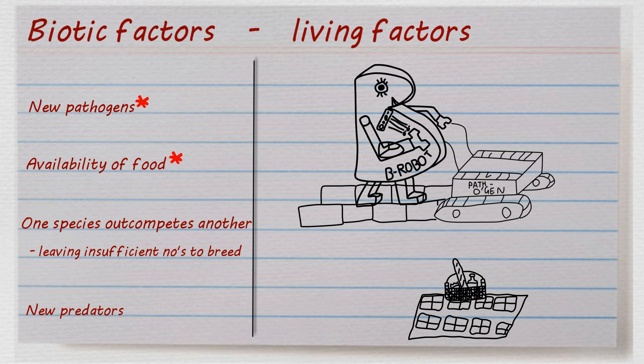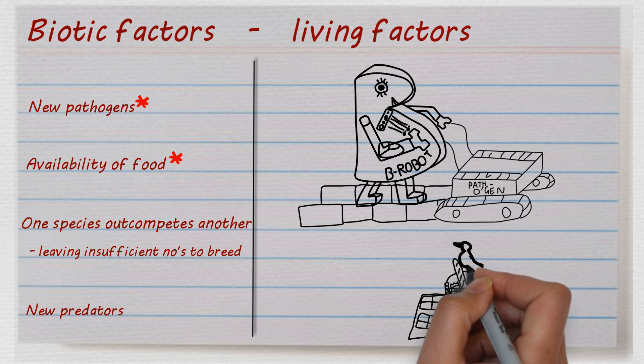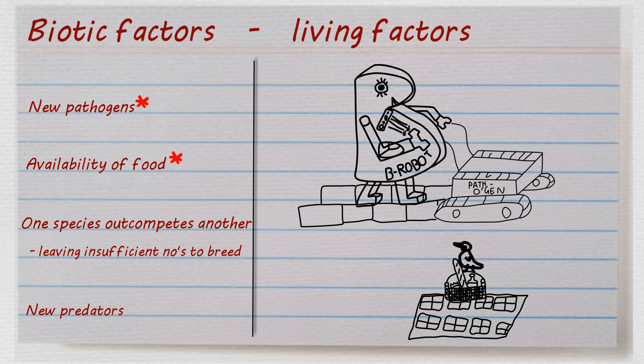But the reason it's glancing over nervously is because there is a bird eating all the food — the robot has a competitor. If it does not get there soon, there won't be enough food to keep it alive. Then where will all the new young B robots come from? Competition for food is a biotic factor.